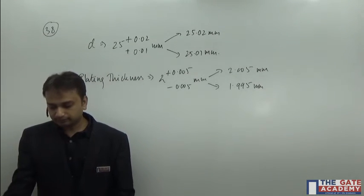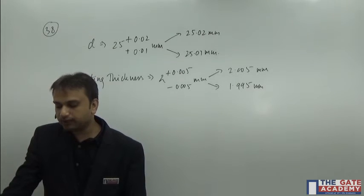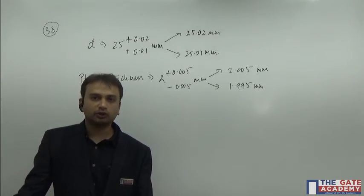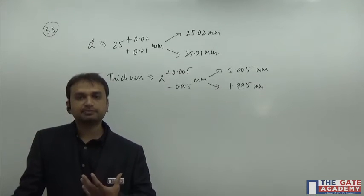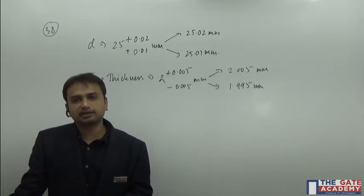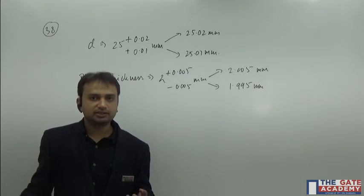Now, you must understand that the go-ring gauge is going to inspect what? It is going to inspect the maximum material condition. So what is the maximum material condition?